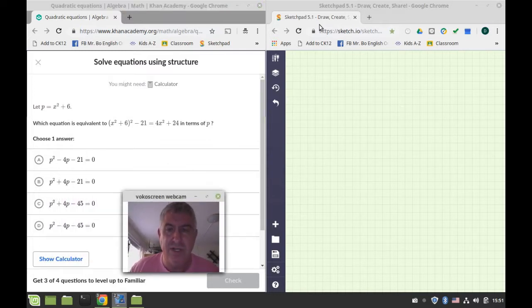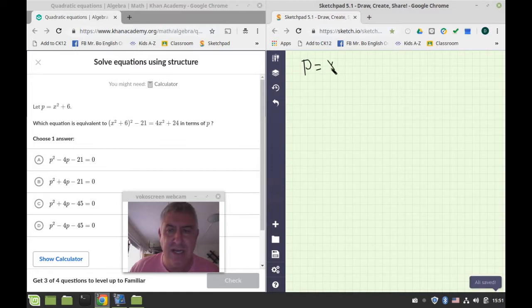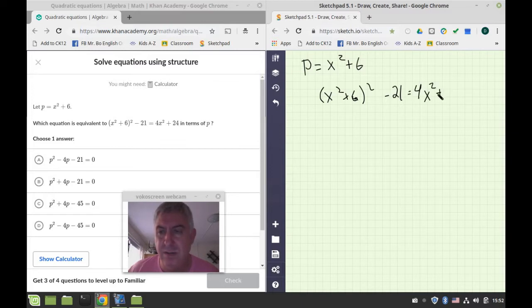So our first question tells us the substitution, and most of the times you're going to have to identify this yourself. So we're going to find this thing, x squared, this expression, x squared plus 6, and every time we see it, we're going to replace it with the variable p. x squared plus 6 quantity squared minus 21 is equal to 4 times x squared plus 24, and I'm going to identify that I can pull out a 4 from here, so I'm going to have x squared plus 6, so it's 4 times x squared plus 6.